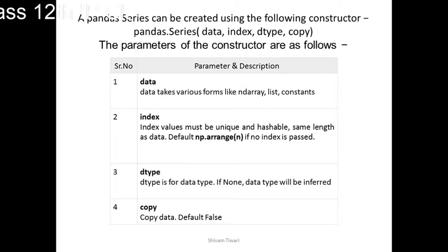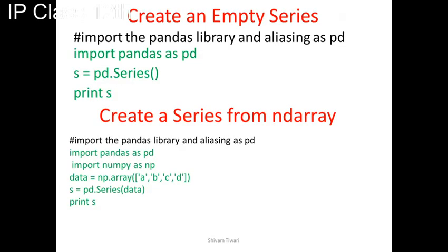So here in series, only four parameters we can use. First data - data takes various forms like ndarray, list, constant, etc. Index value must be unique and hashable. We can use specific data type and copy data.